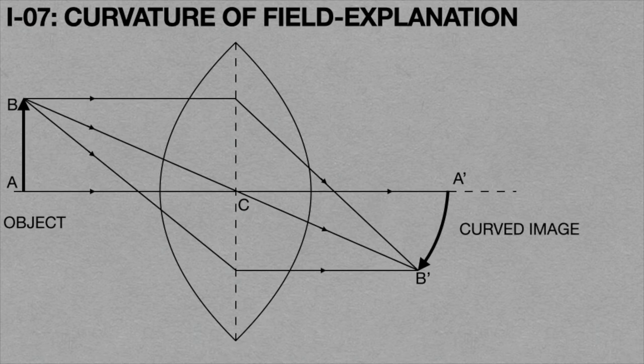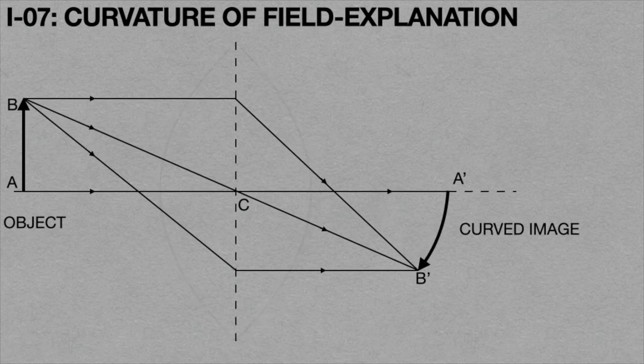Hence, this aberration is called curvature of field because the curvature happens. This is due to the curvature nature of the lens.